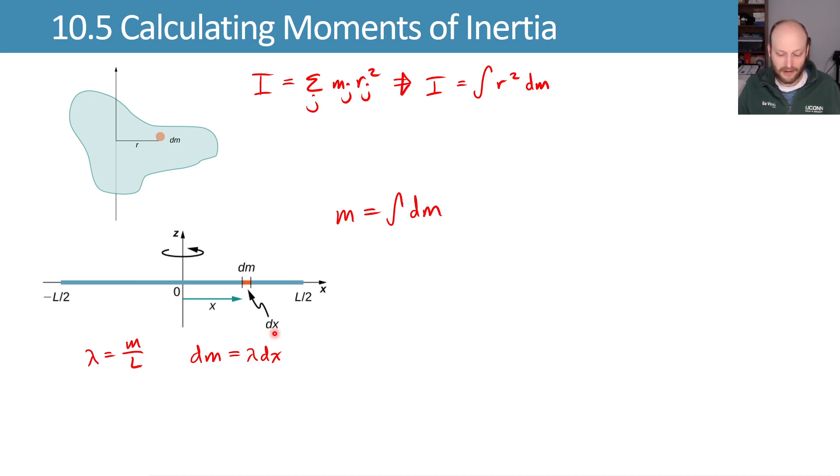We can now substitute this in to our integral and say that my mass is equal to the integral of dm, which is lambda dx, or m over L dx. We integrate over the range of our object, which goes from x equals negative L over 2 to x equals positive L over 2.